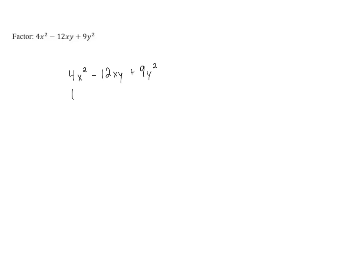The first term, 4x squared, is a perfect square. It's the quantity 2x squared.